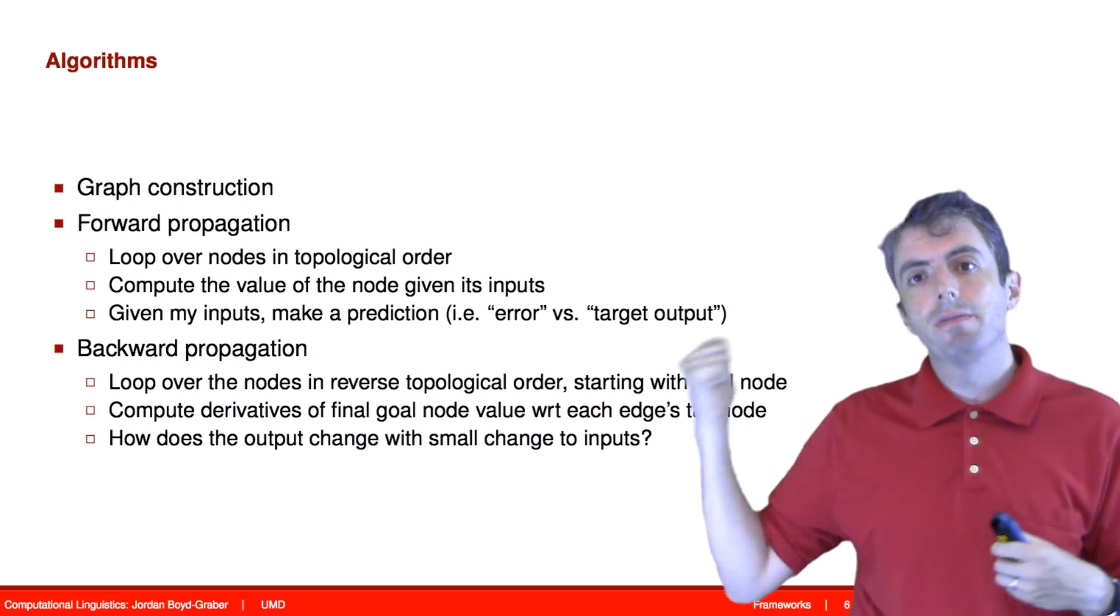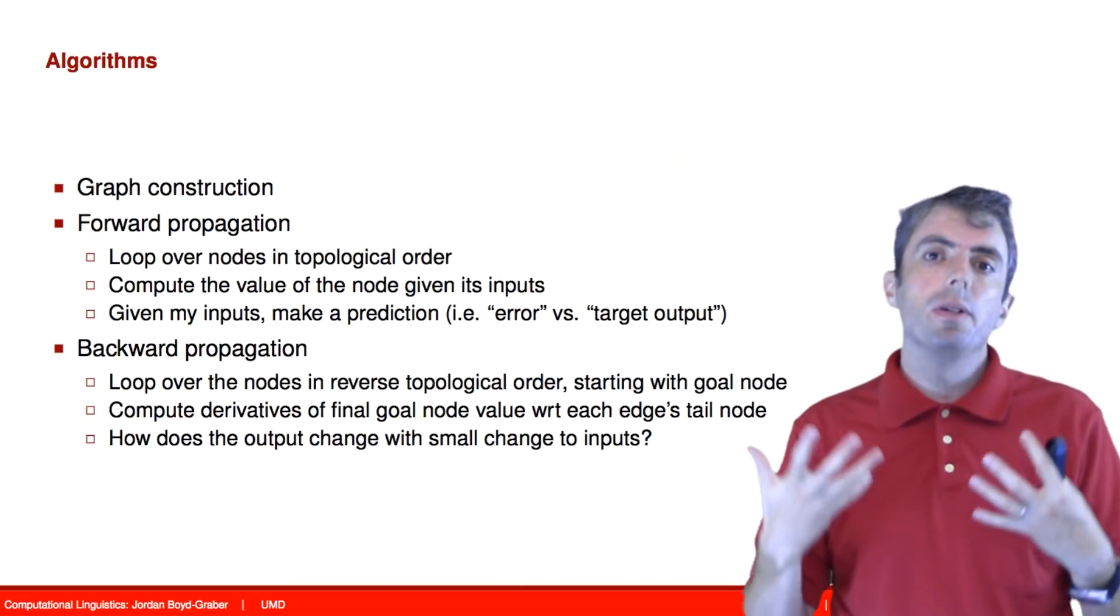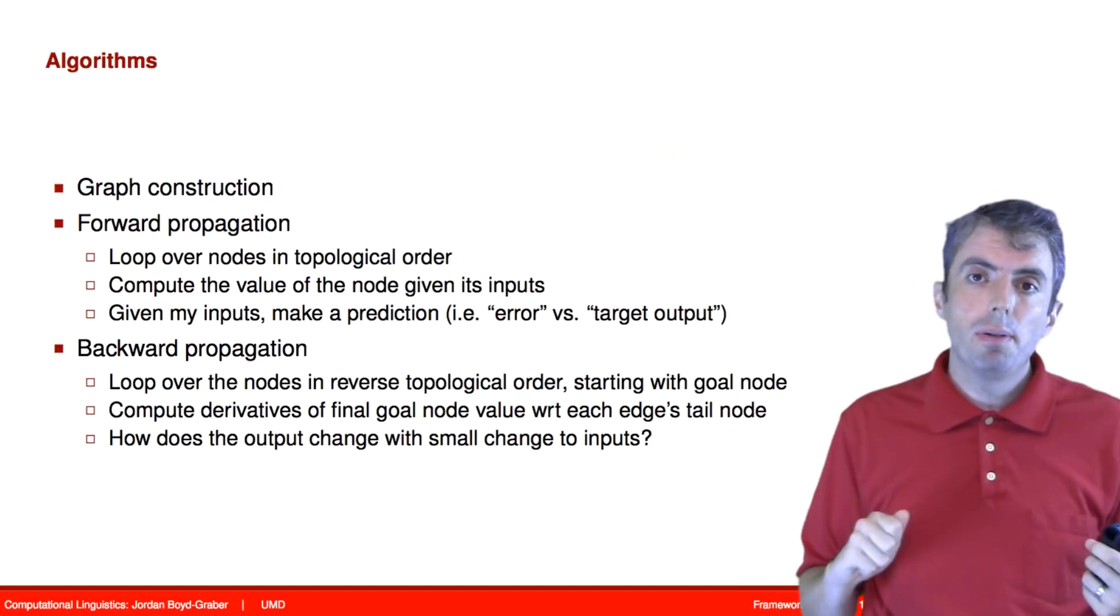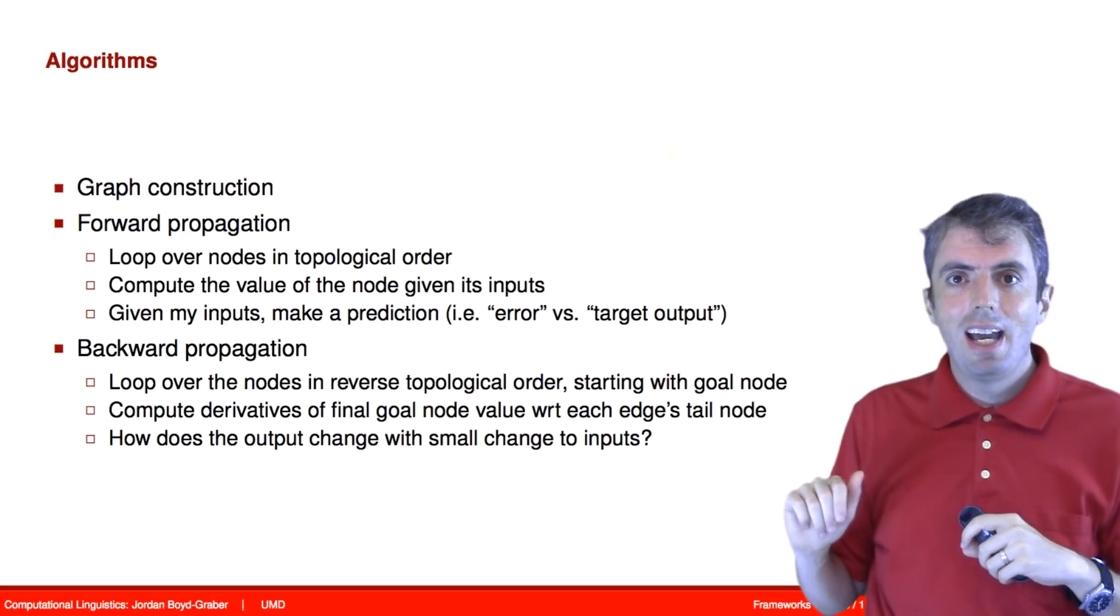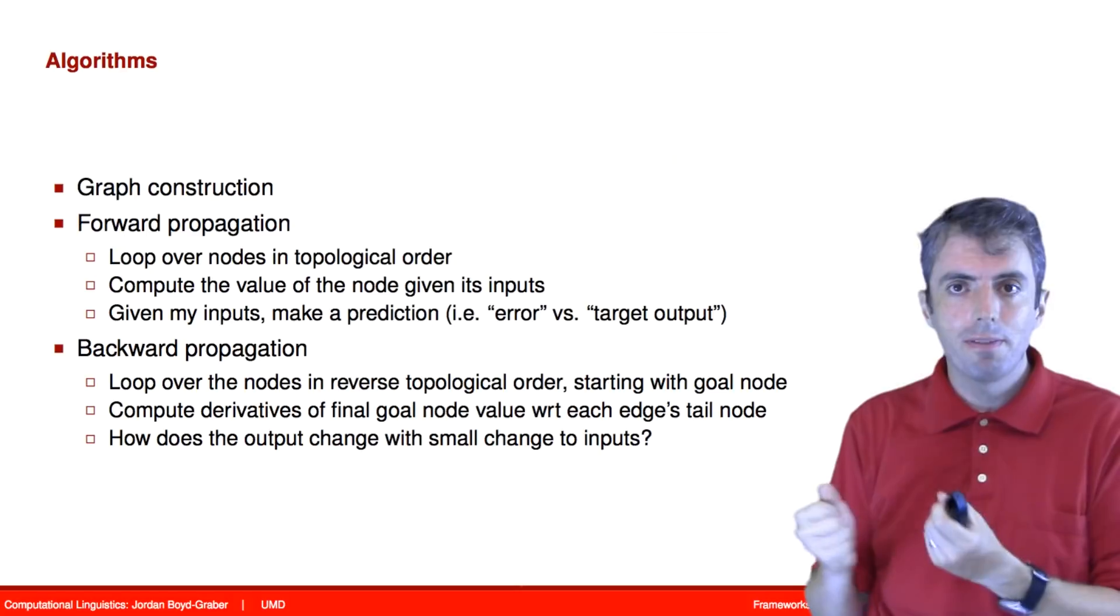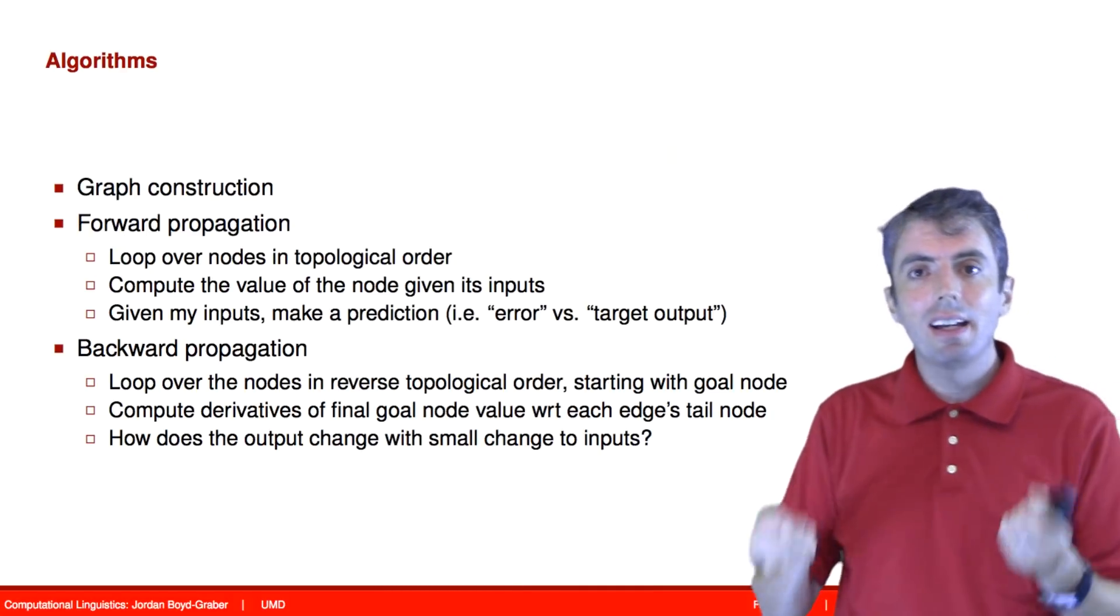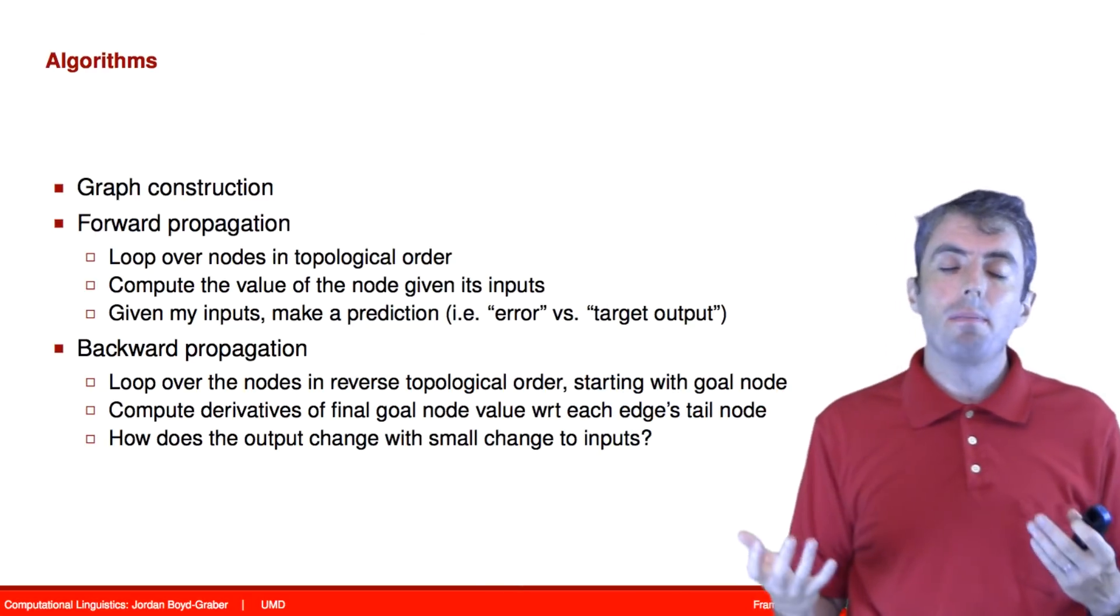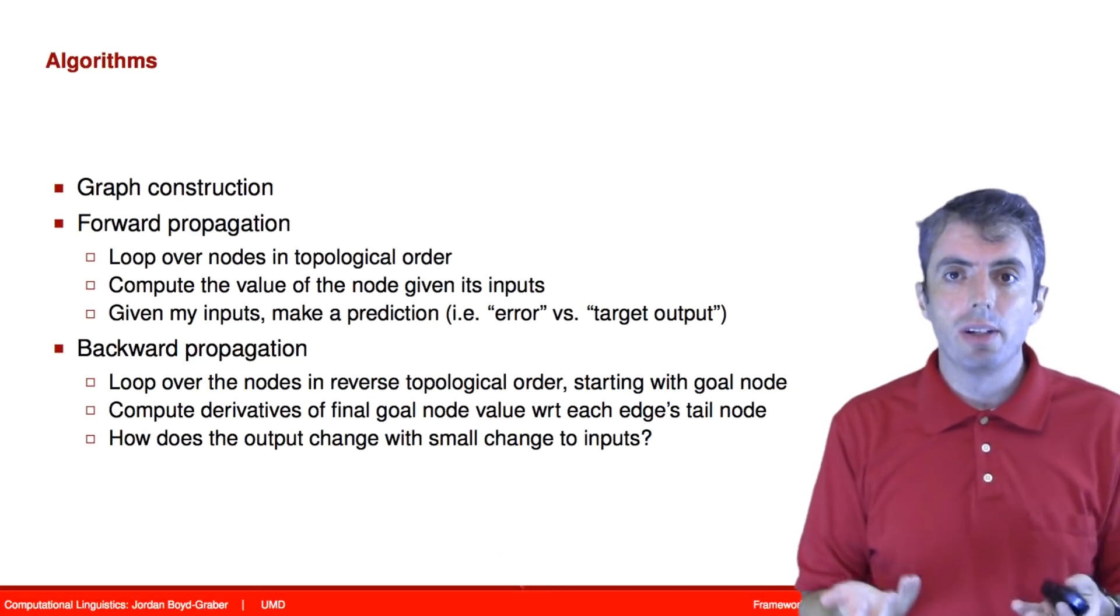There are three big steps. So first, you construct the graph. You build up the expressions that encode your model. Then your algorithm needs to be able to take inputs, go up the computation graph as we showed it on the previous screen, and produce outputs. Once you have those outputs, you compare them to a reference that you want to optimize. That gives you a loss. That loss then needs to backpropagate through the computation graph to give you a gradient with respect to each of the variables that you're going to optimize.